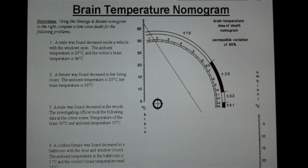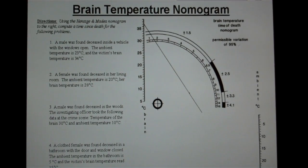So I'm going to go through just two quick examples. It's the same concept as before. In the first example here, a male was found inside a vehicle with the windows open. The ambient temperature is 23 degrees centigrade and the victim's brain temperature is 34 degrees centigrade.